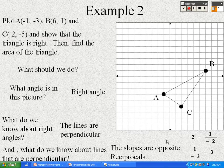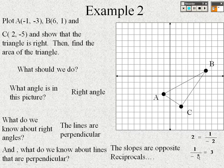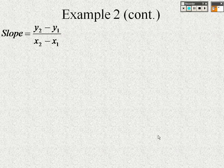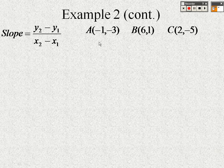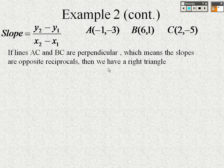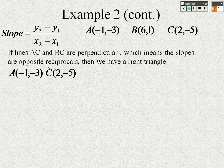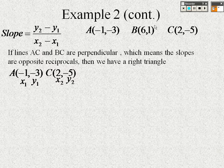For example, 2 and −1/2 are opposite reciprocals, as are 1/3 and −3. So we'll find the slopes of lines AC and BC. If those slopes are opposite reciprocals, then the lines are perpendicular and angle C is a right angle, confirming we have a right triangle.